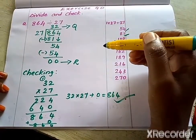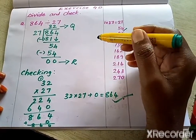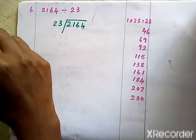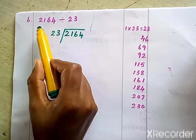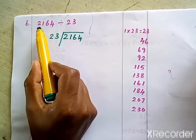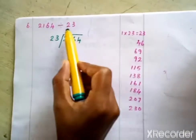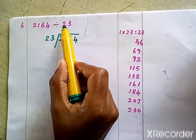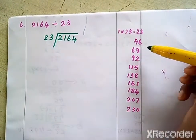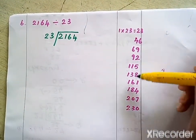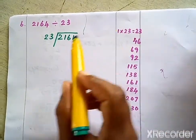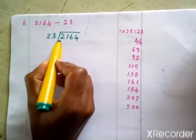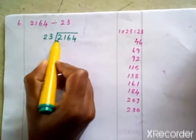Pause the video and copy this question in your classwork. Here is one more example: 2164 divided by 23. The divisor is 23, so I have written the table of 23 here — writing the table will make division easier. We write it out like this.